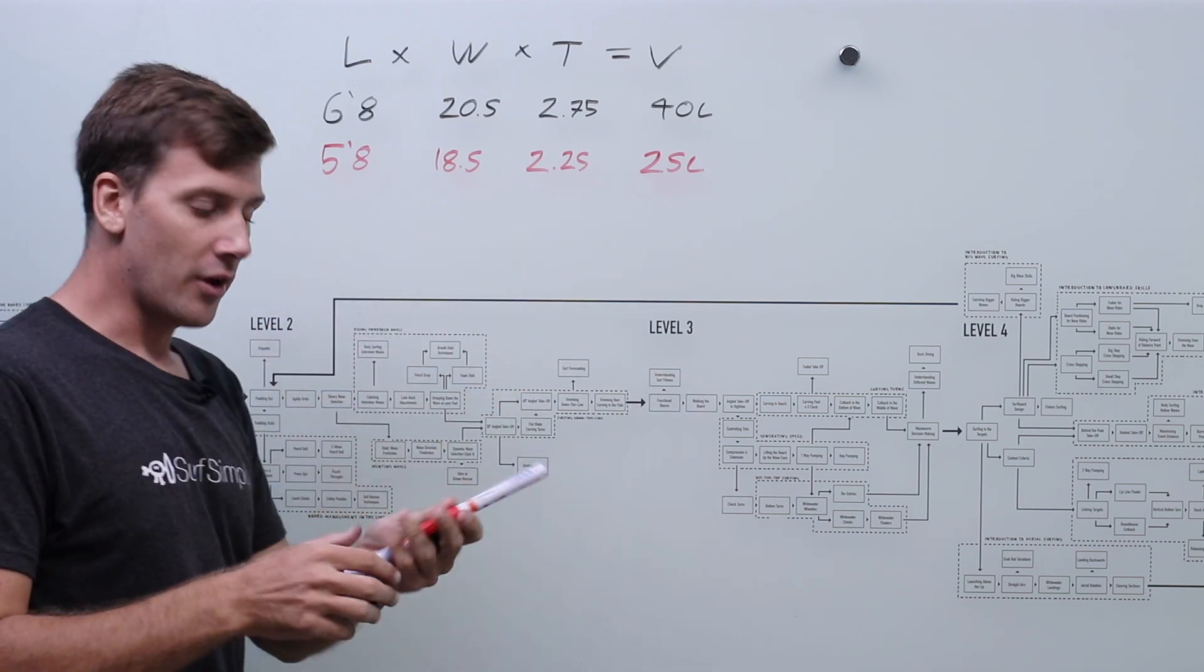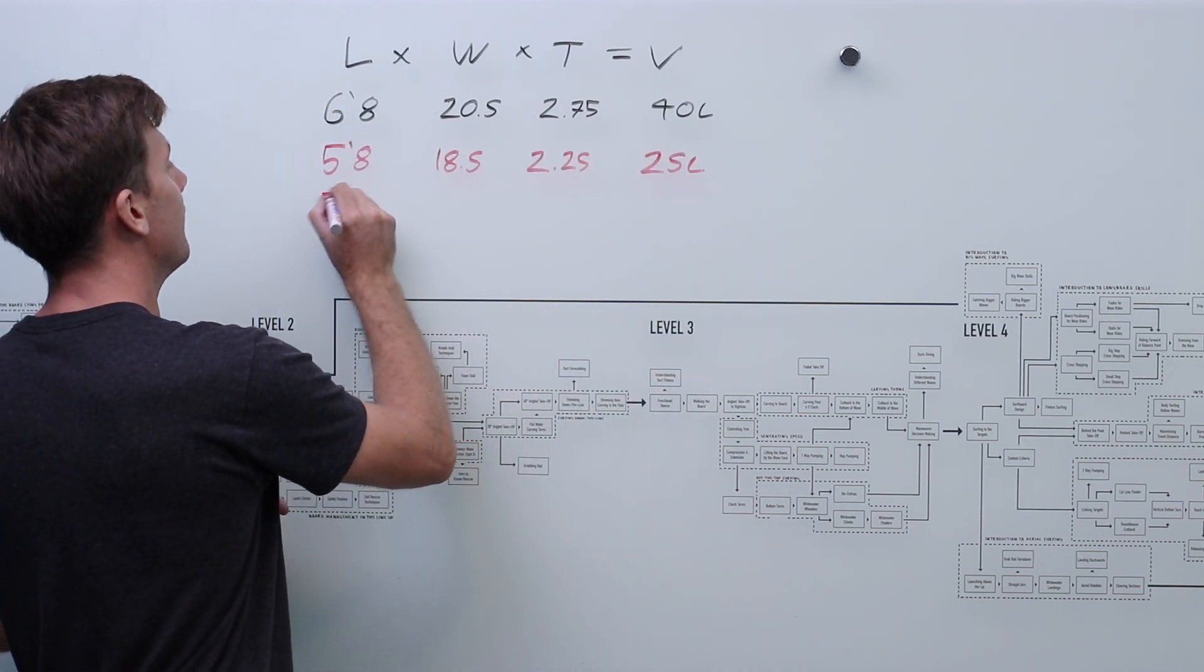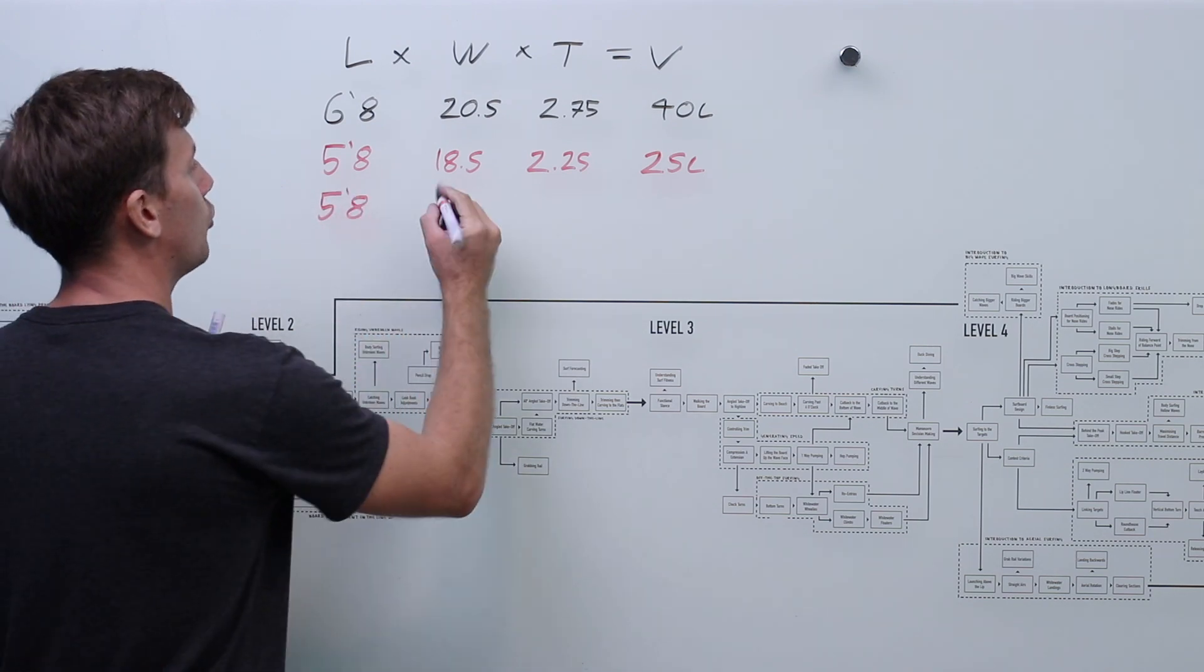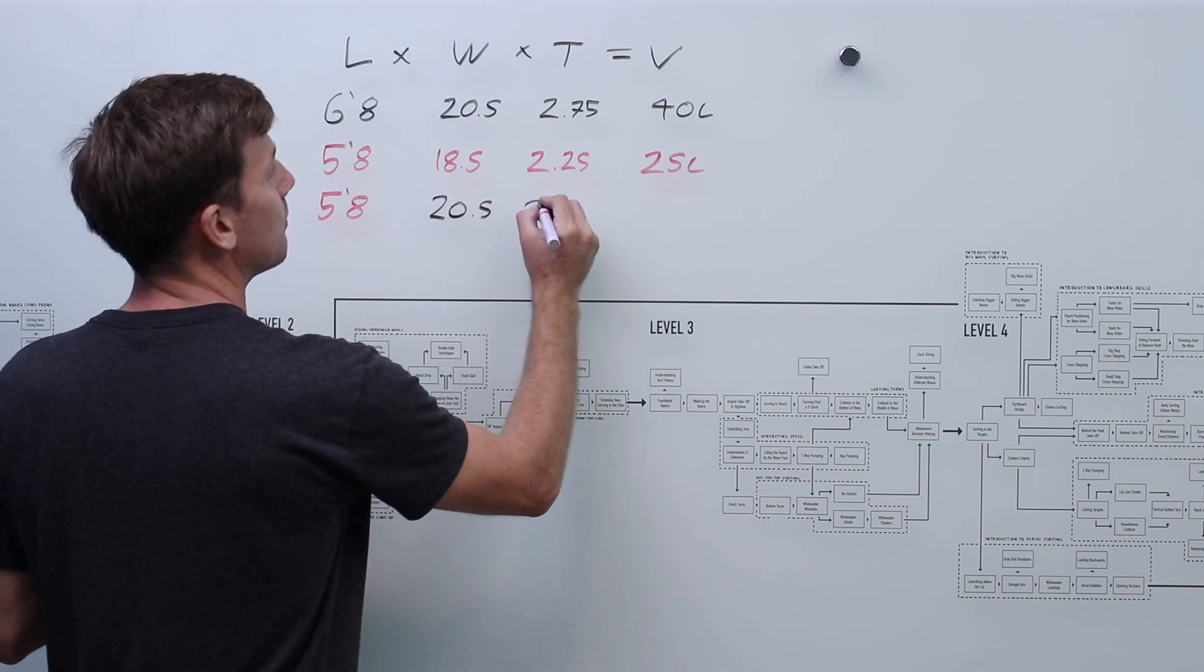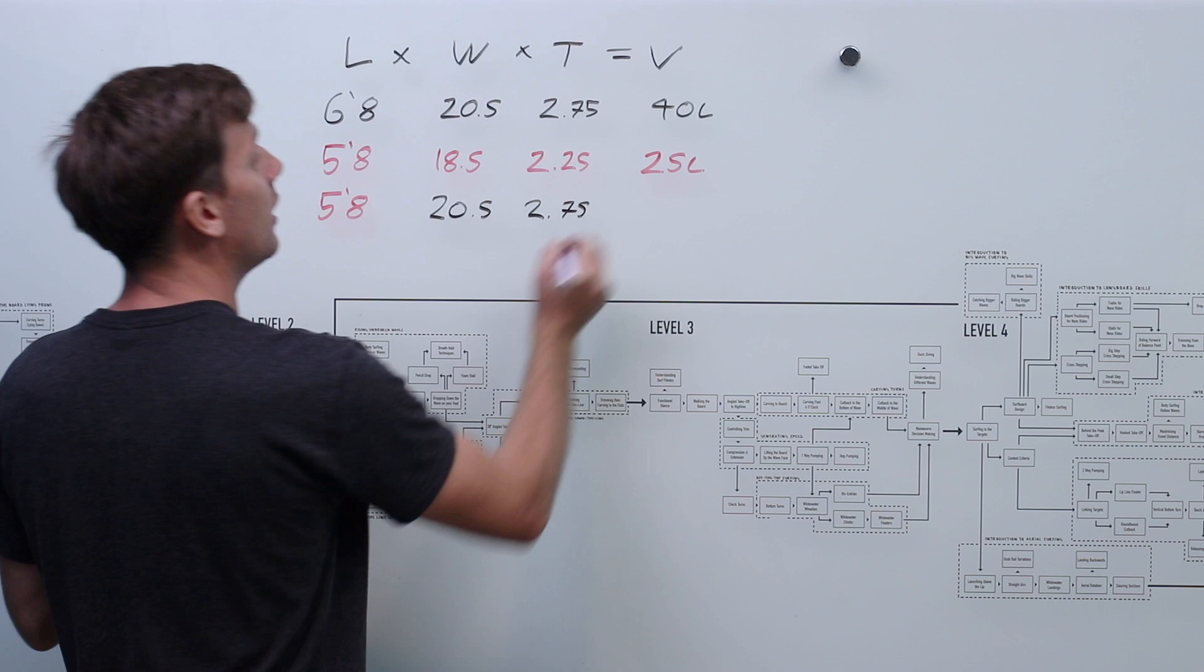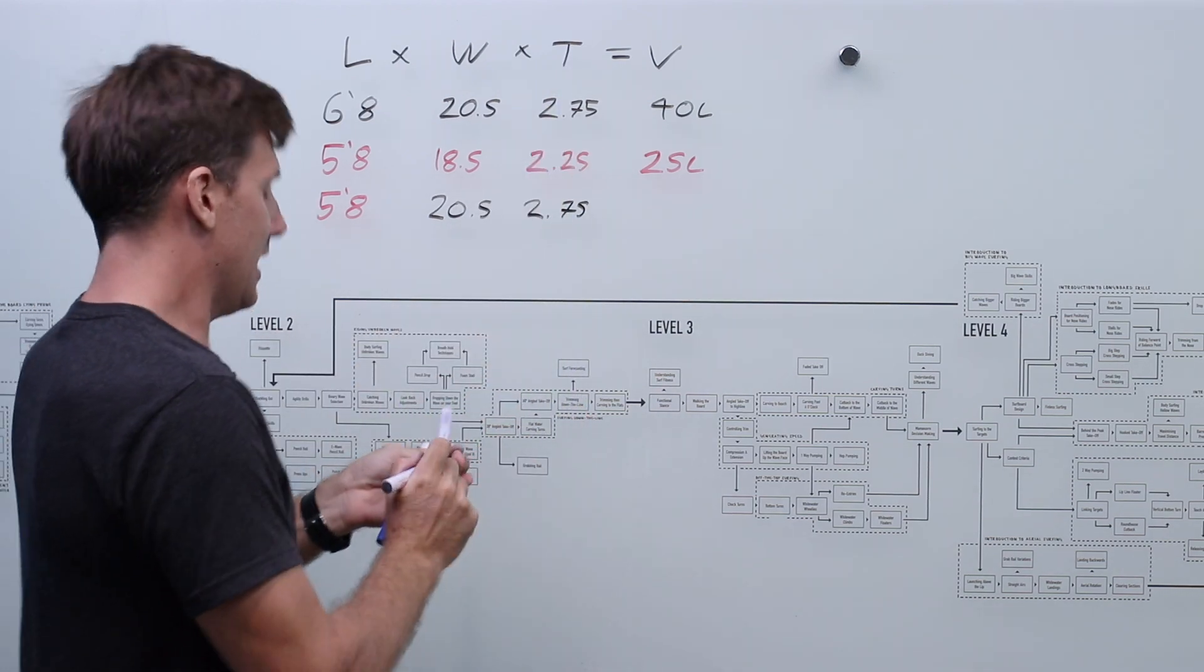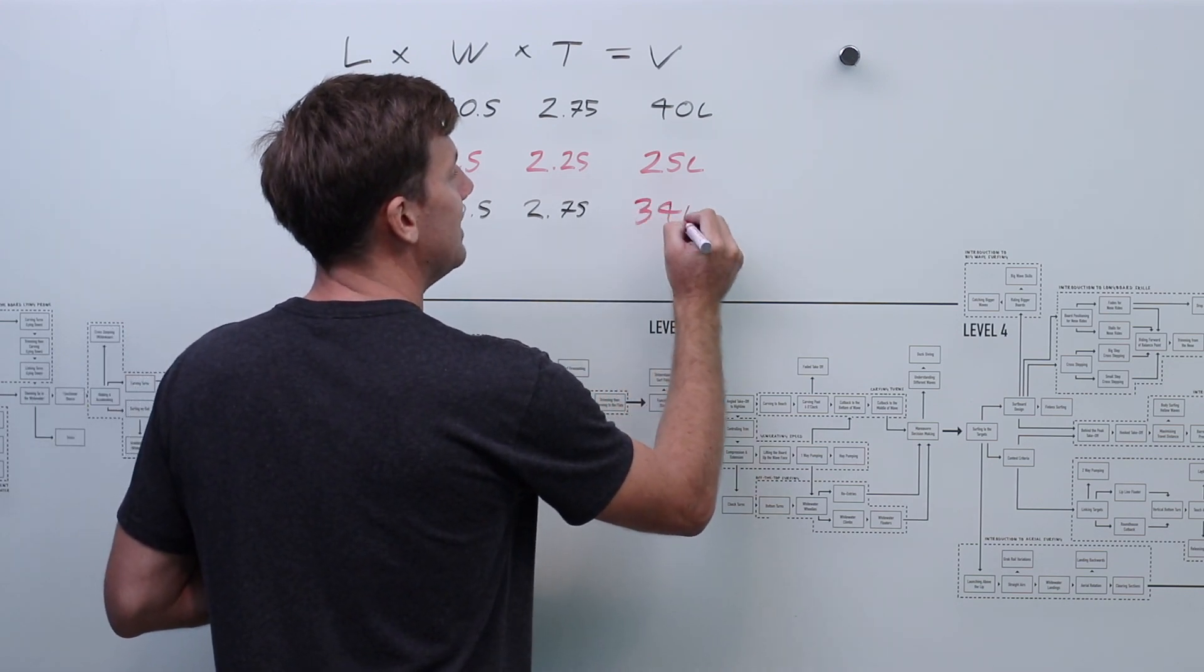Now if we, let's say we were to try to keep as many of these numbers the same. So we had our 5'8" but we kept the 20.5 from before and we kept the 2.75 from before. What we would end up with is a volume of about 34 litres.